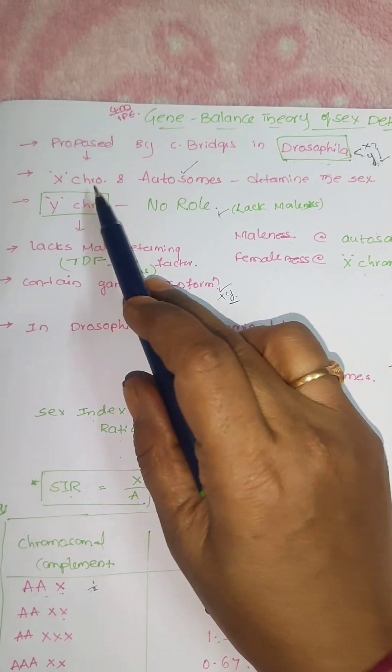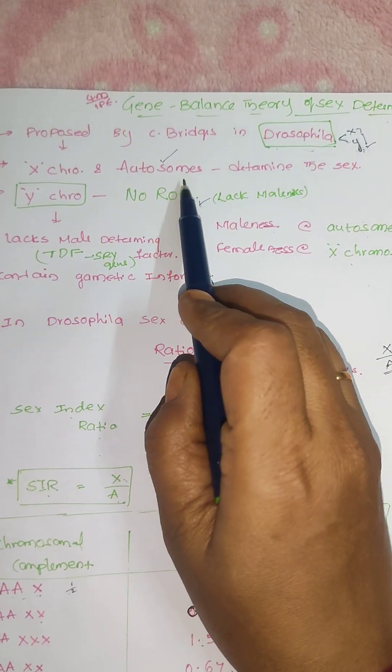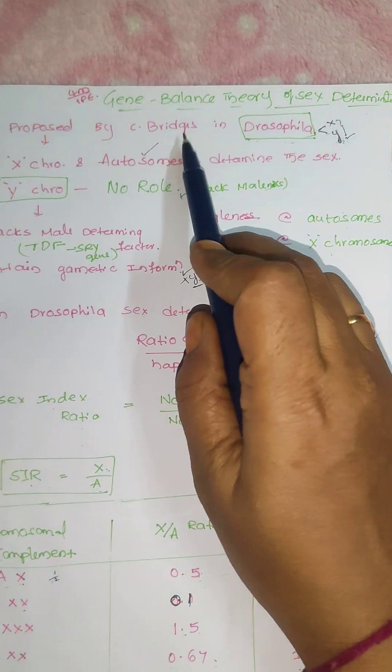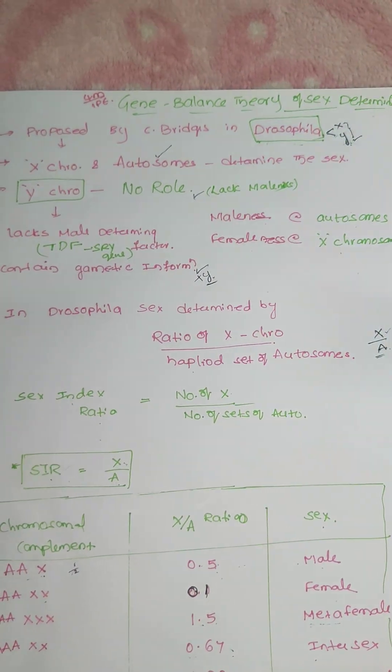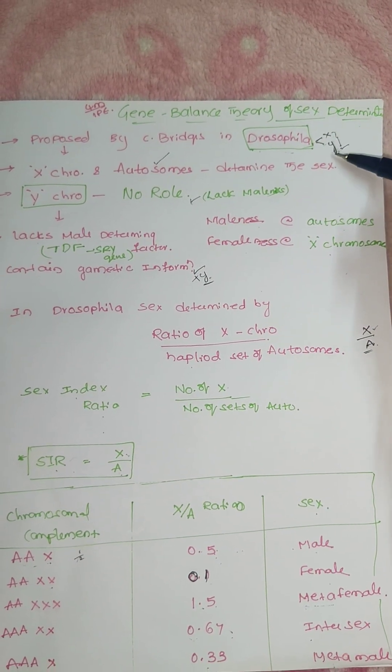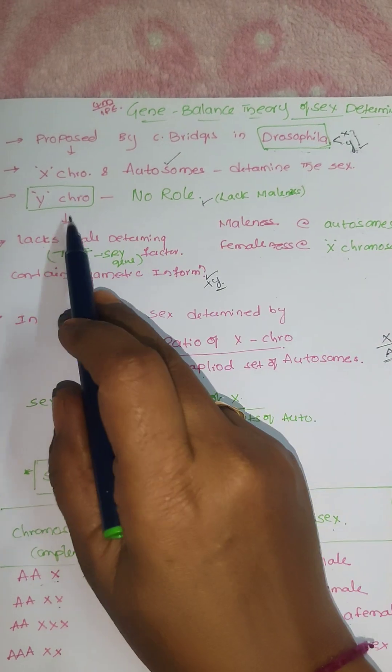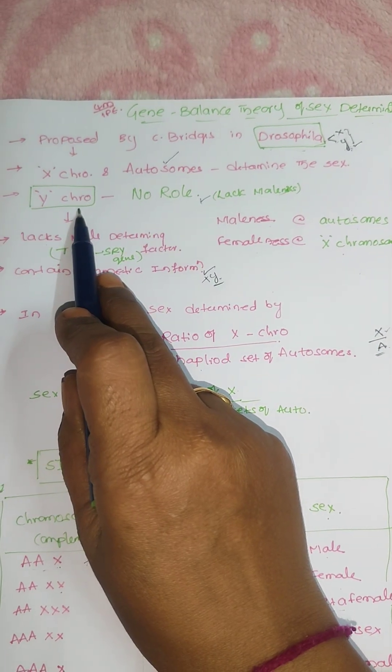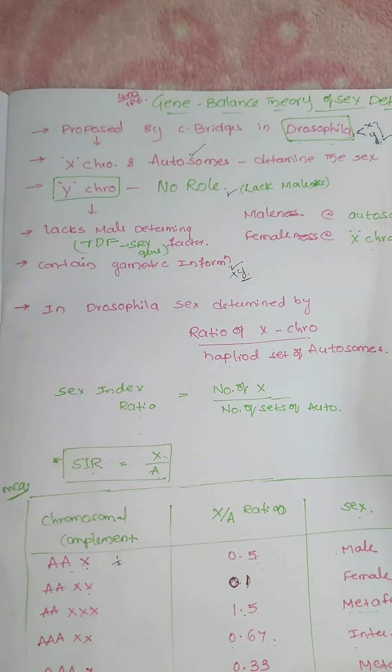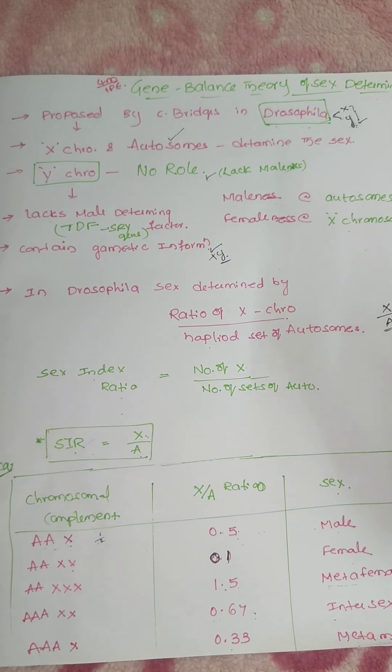So here X chromosome and autosomes determine the sex of the offspring. That is the concept given by CB Bridges in the gene balance theory. Generally X and Y chromosomes decide, but here the Y chromosome in Drosophila does not have any role in determining the sex of the offspring.